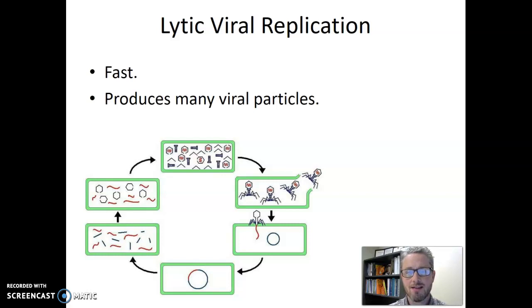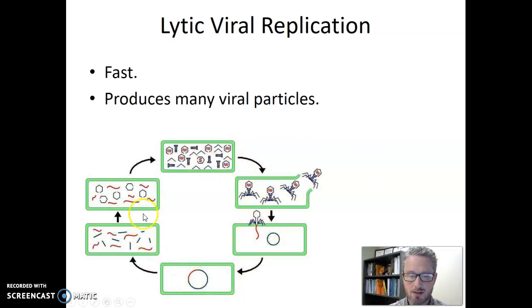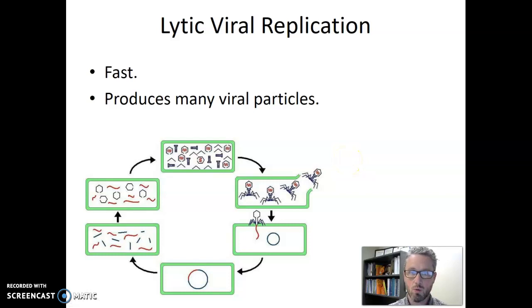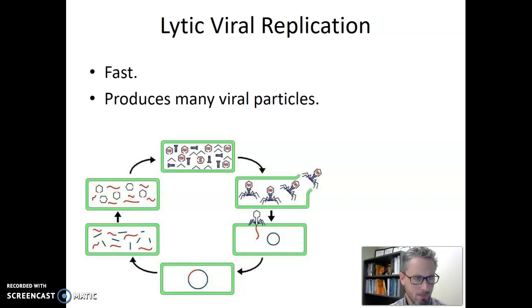It's important to recognize that this lytic life cycle produces many viral particles. We see here one virus going into the cell and reproducing, and then many viruses coming out. This isn't like cell replication where one cell makes two cells — in viral replication, one virus can make many many viruses. For the bacterial viruses we're going to talk about, the number of viruses produced is often in the hundreds.